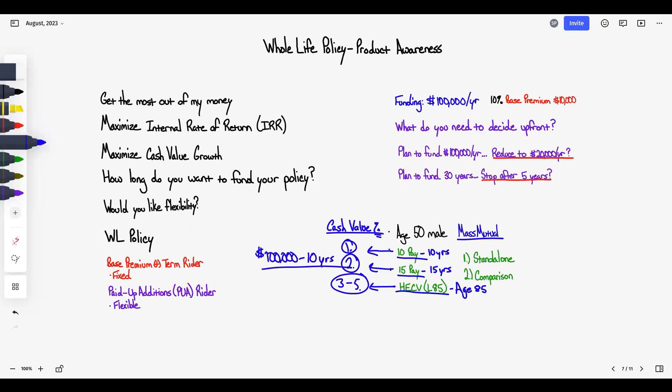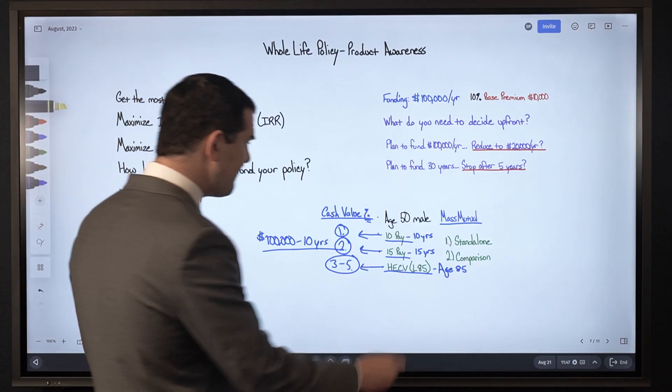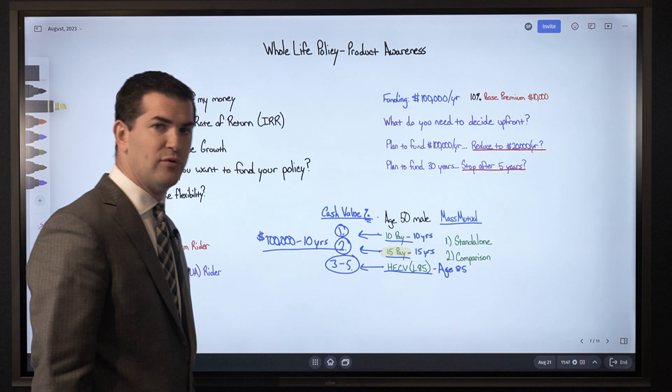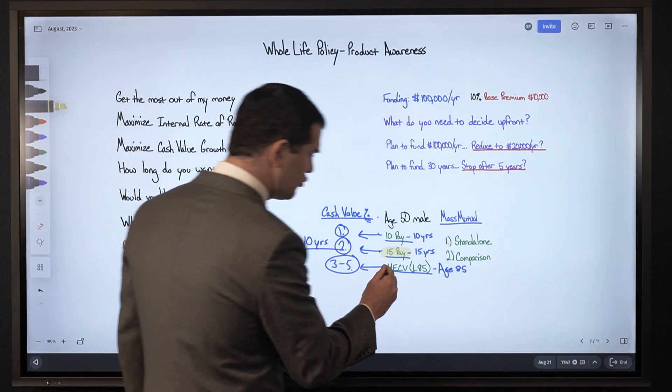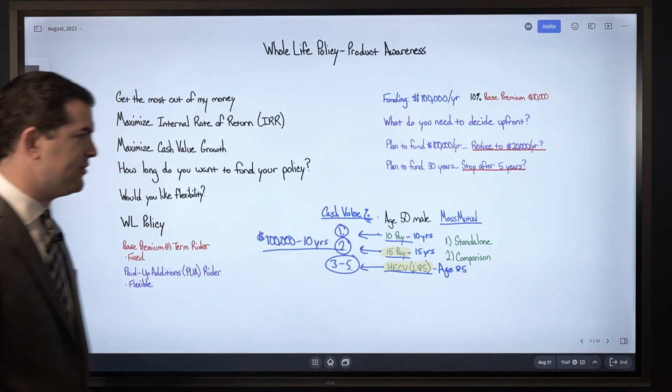the 10 pay will give me the most money, especially long-term. But you'll see the most money in that option between years four and five, again when all things are equal. Because remember, I can have a 15 pay policy and stop after 10 years. The same is true of that high early cash value policy.